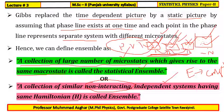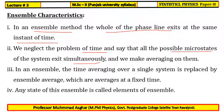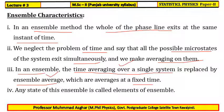From the definitions, we summarize some characteristics of ensemble. In the ensemble method, the whole phase line exists at the same instant rather than evolving over time, because we measure all systems simultaneously. We neglect the problem of time and consider all possible microstates of the system simultaneously. The time averaging over a single system is replaced by the ensemble average at a fixed instant. Any state of the ensemble is called an element of the ensemble.